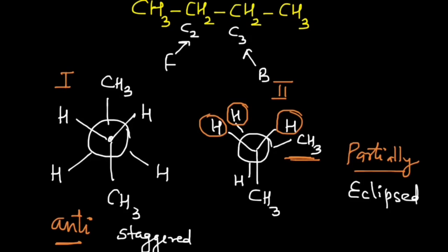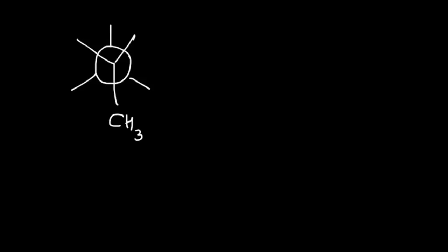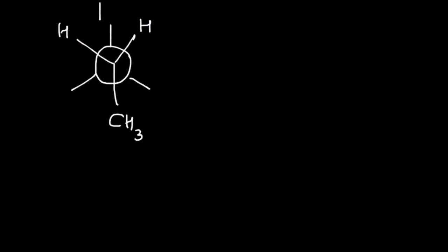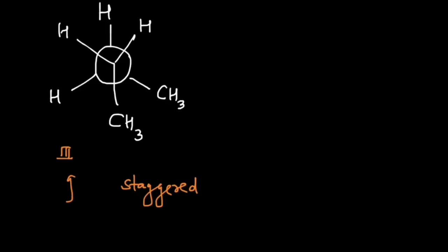In this new staggered form, on the front carbon I have CH₃, H, and H. The back carbon has CH₃, H, and H in staggered positions. All the groups are far apart so this is staggered, but the two CH₃ groups are close together, causing some crowding. This is not anti-staggered; it is known as the gauche or gauche-staggered form.